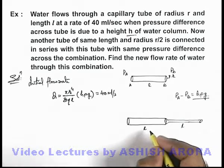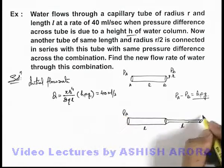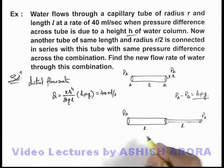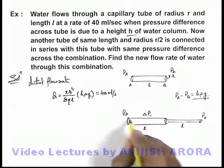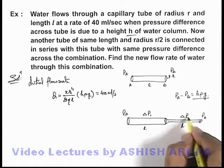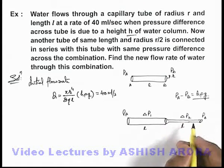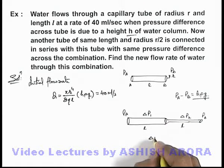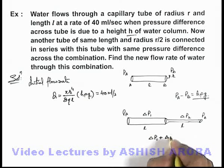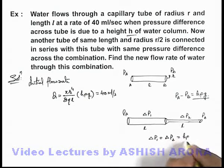In this situation, the pressure difference remains the same at Pa and Pb. We can consider if ΔP₁ is the pressure difference across the first tube and ΔP₂ is the pressure difference across the second tube. Here ΔP₁ plus ΔP₂ will equal h ρ g in the final situation.